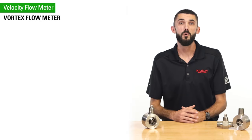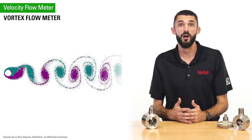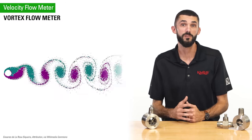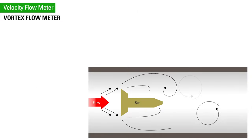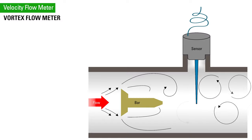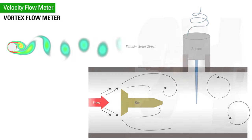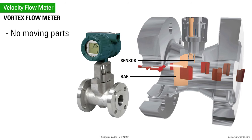Vortex flow meters operate under the vortex shedding principle, where an oscillating vortex occurs when a fluid flowing past a bar positioned in the flow path generates a frequency that can be read by the meter. Because there are no moving parts, it is ideal for applications where low maintenance costs are important.